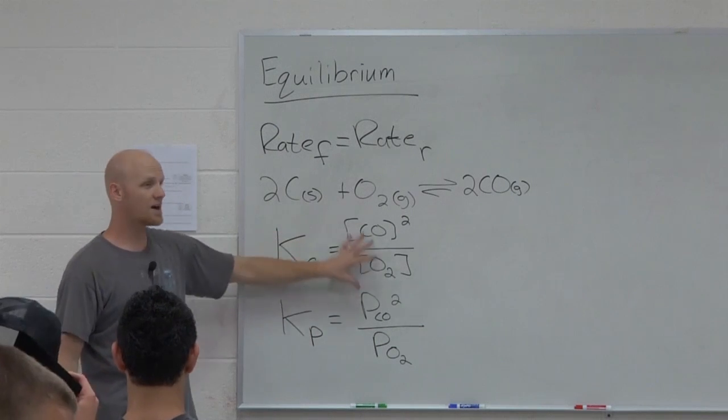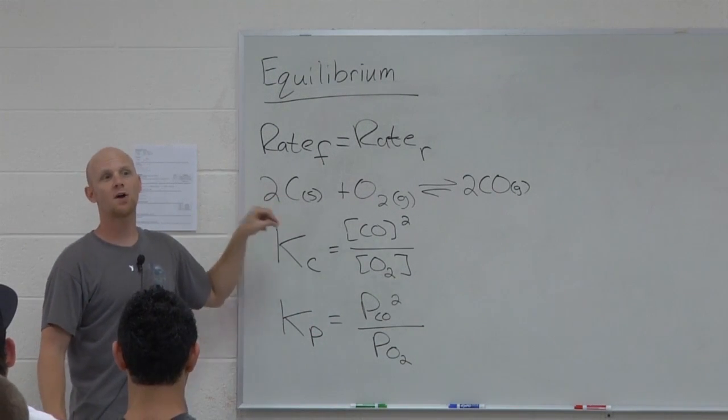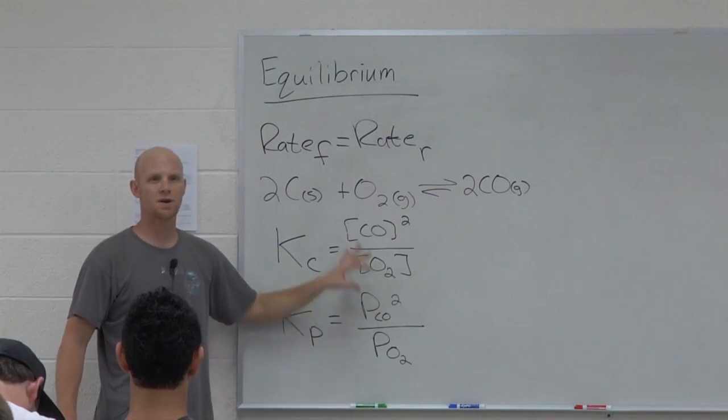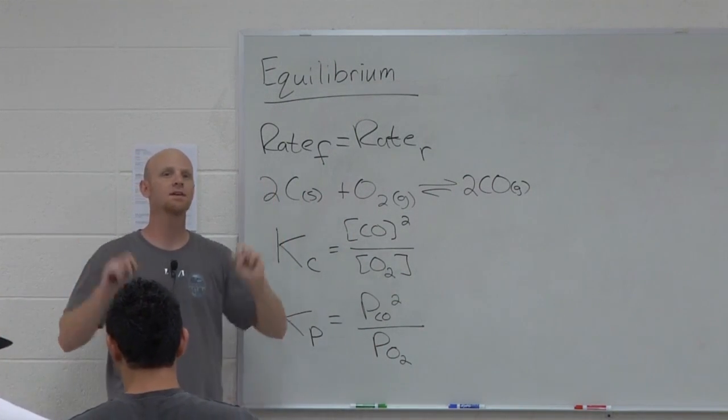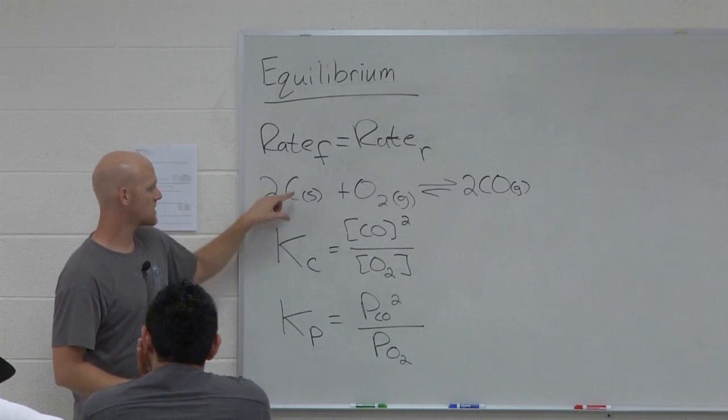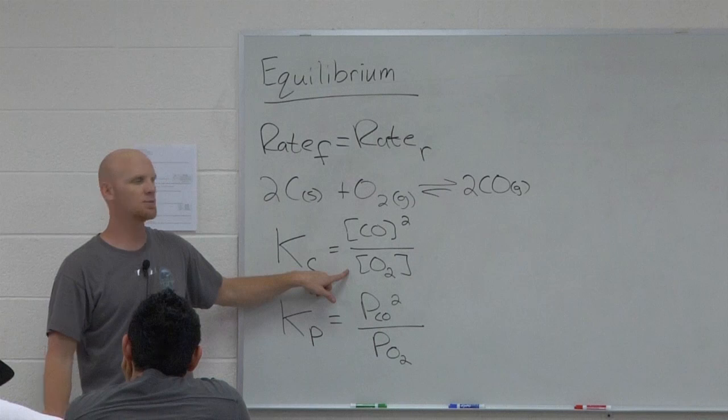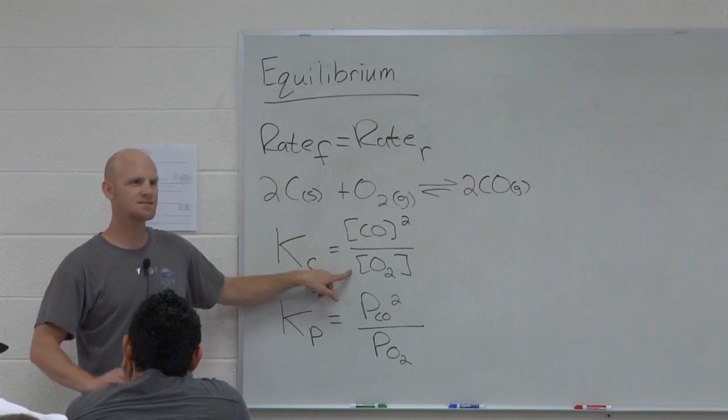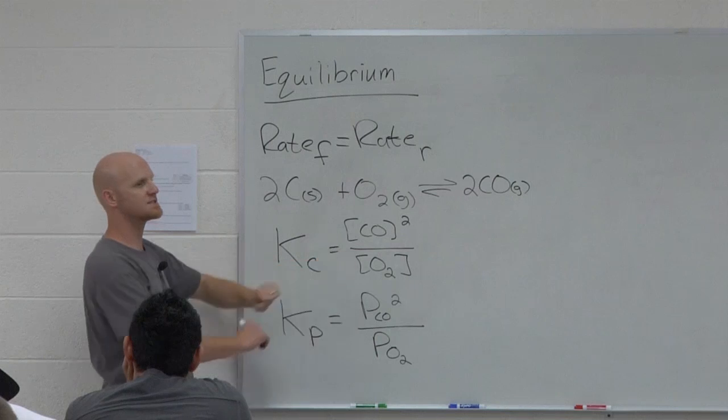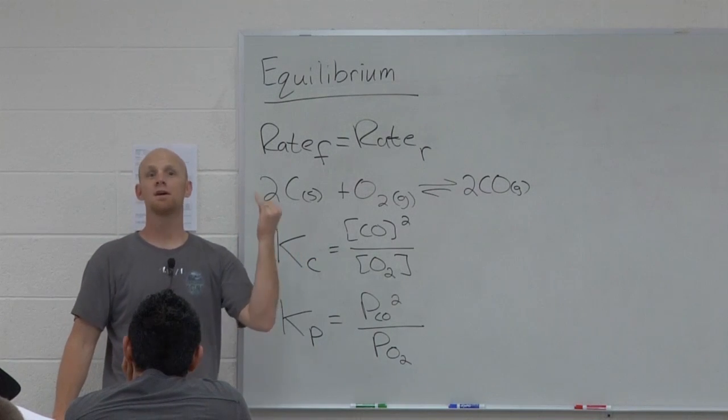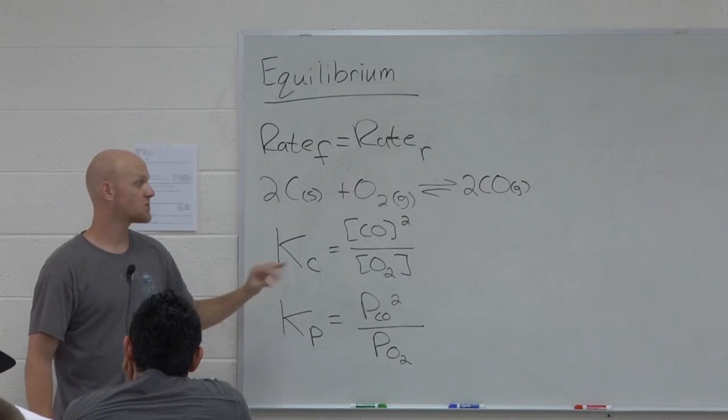Now here's the deal. What did I leave out of both of these expressions either way? I left the solid out. Solids and liquids do not show up in these expressions. Solids and liquids are known to have what we call an activity of one. And so if I put carbon down here, but it's equal to one, well what's anything multiplied or divided by one? It's self and it doesn't affect anything. And so we just leave solids and liquids out of these expressions entirely. Gases will show up, aqueous species show up, but no solids, no liquids. That's tricky.